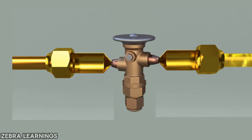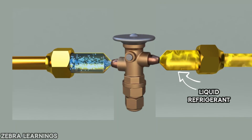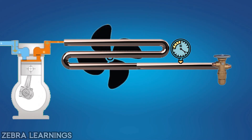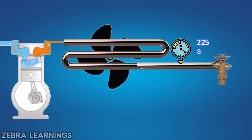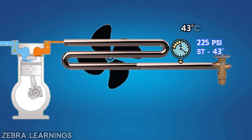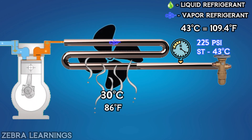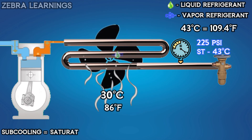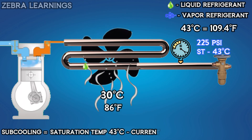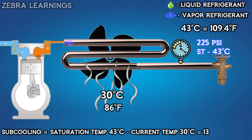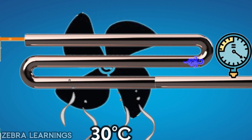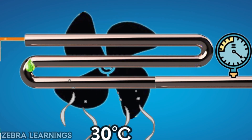When the refrigerant goes inside the expansion valve, it should only go in liquid form — only then can we get proper cooling. If the R22 refrigerant inside the outdoor unit is at a pressure of 225 PSI, its saturation temperature will be 43 degrees Celsius. If we cool the outdoor unit to 30 degrees Celsius, the subcooling value is: saturation temperature 43 degrees Celsius minus current temperature 30 degrees Celsius equals 13 degrees Celsius. So if we cool the refrigerant below 43 degrees Celsius in the outdoor unit, all the refrigerant turns into liquid state.